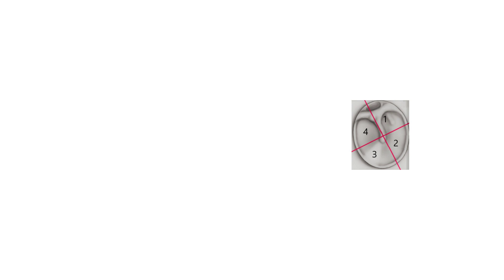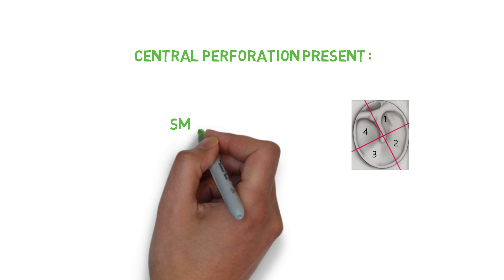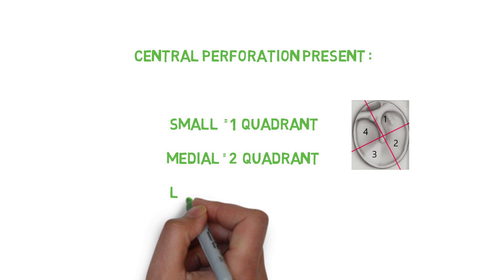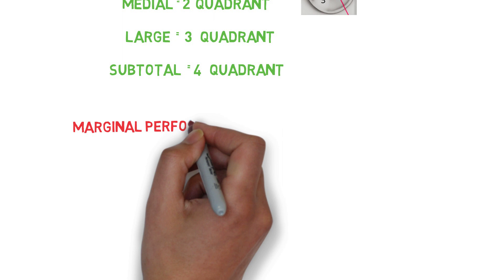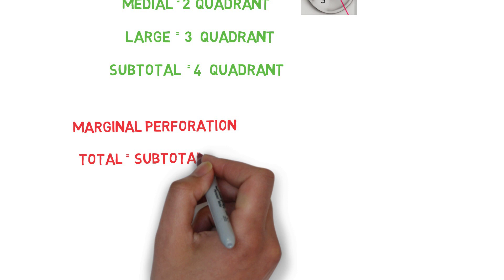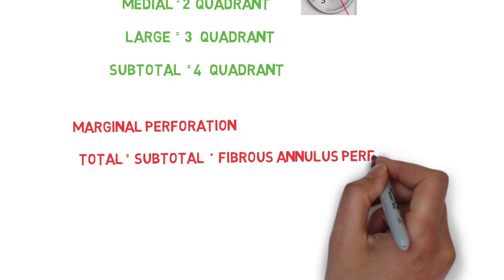Mucoid discharge has a non-foul smell, while mucopurulent discharge has a foul smell with profuse ear discharge. From the site of infection, central perforation can be classified into four parts based on the tympanic membrane quadrants: if perforation occurs in one quadrant it is small, two quadrants is medium, three quadrants is large, and four quadrants is subtotal. Total perforation is subtotal plus perforation occurring in the fibrous annulus, which is the marginal part of the tympanic membrane.